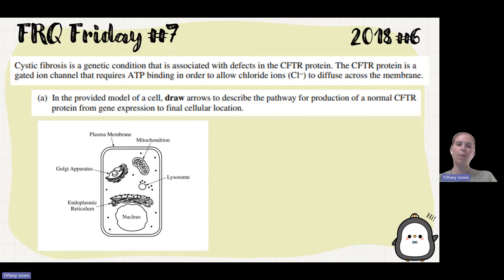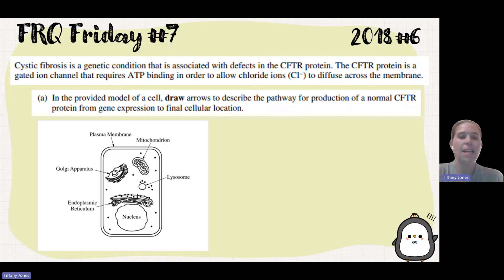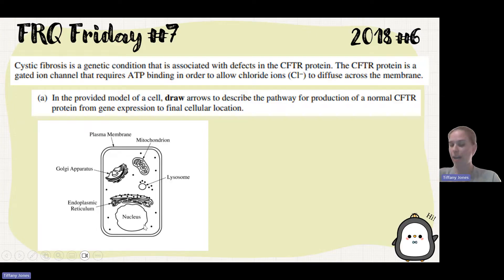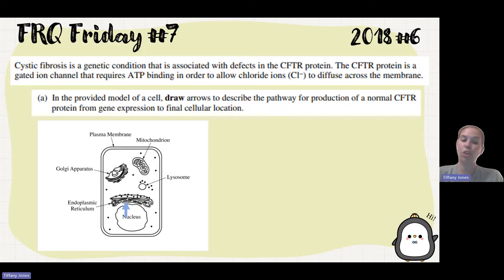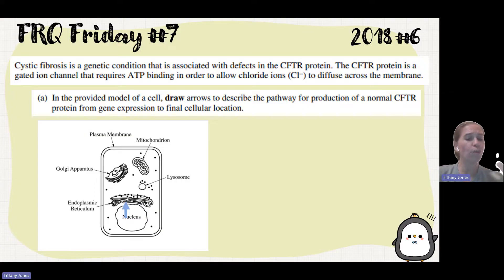We think to ourselves — where are the genes? The genes are going to be part of the DNA, and our DNA is found in the nucleus. So if we're going from gene expression, that means we go from DNA to RNA, which takes place in the nucleus. Then the RNA is going to leave the nucleus and go to the rough ER. So we should have an arrow going from the nucleus to the rough ER, or from nucleus to a ribosome to the rough ER.